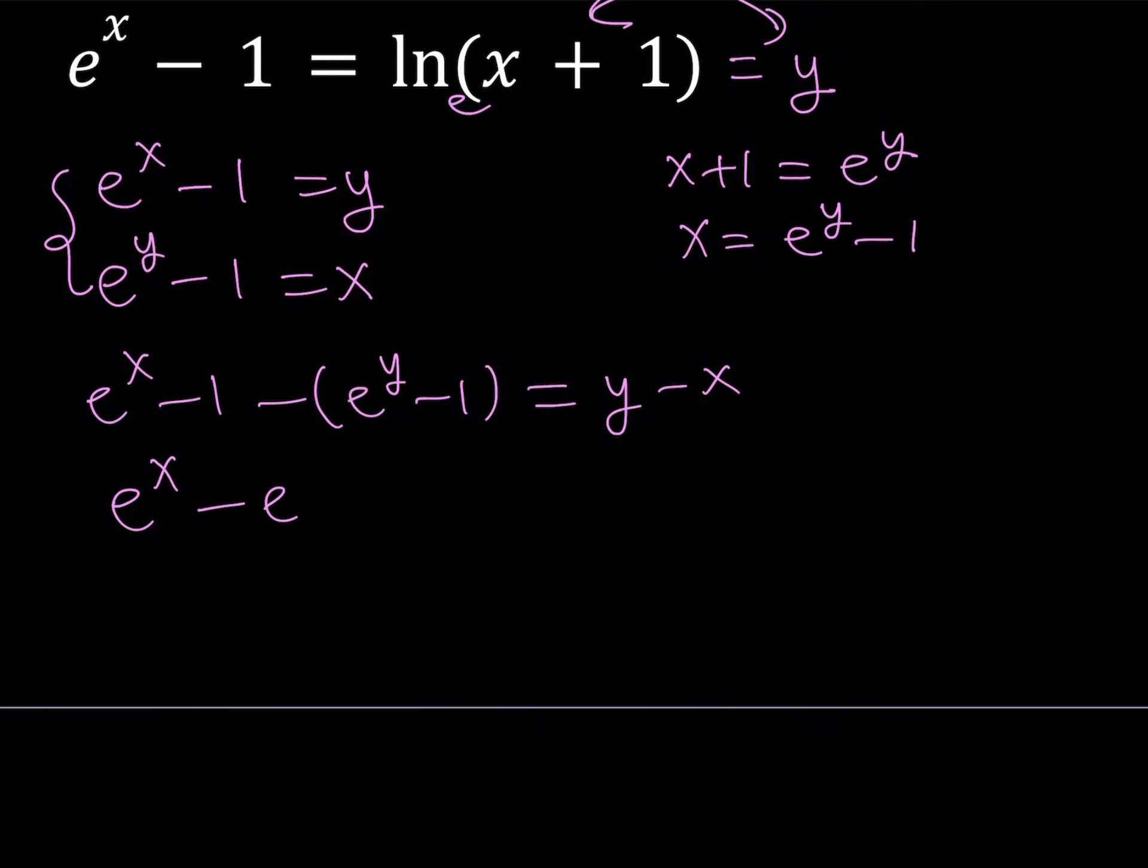Leaving us with e to the power x minus e to the power y equals y minus x. Now I'd like to put the x's on one side and y's on the other side. So we can write it as e to the power x plus x equals e to the power y plus y.